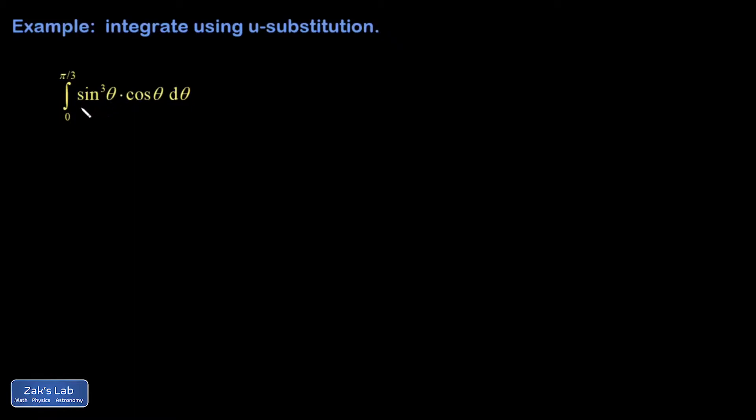So what I see here is a function cubed sitting right next to the derivative of that function. So I'm just recognizing the effects of the chain rule in this, that maybe it just came from sine to the fourth over four, and if I differentiate that, the chain rule would produce the cosine.